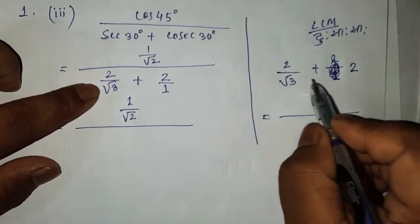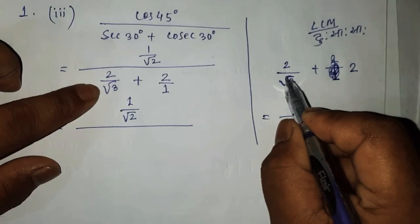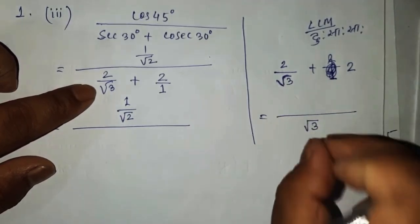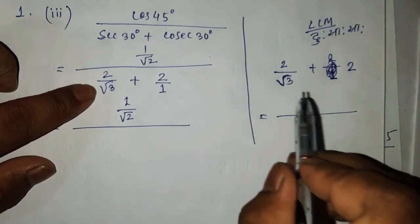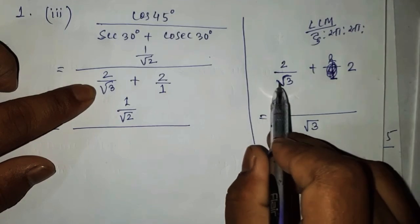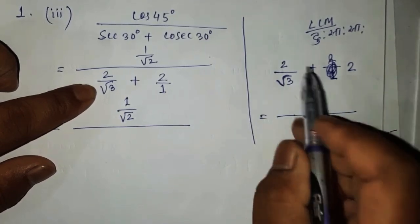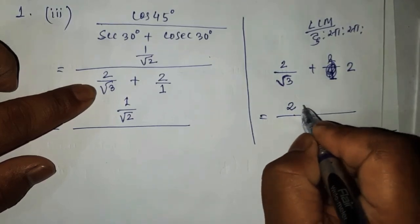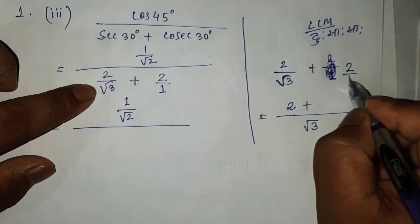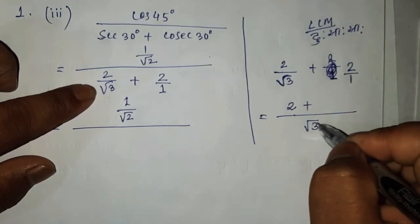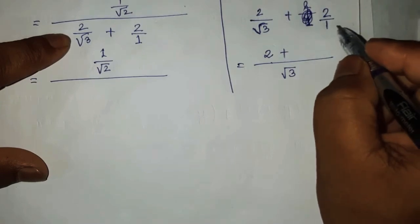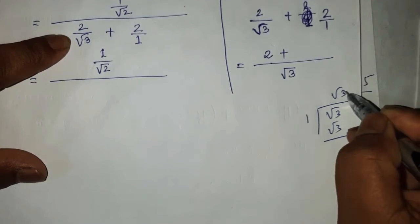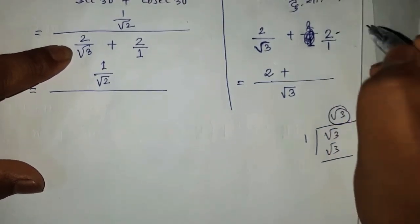LCM is the same as 2 by 1 and 2. So it's only 2 by 1. LCM is the same as 3 by 1 and 2 by 1. So it's only 3 by 1. This is the multiple column.